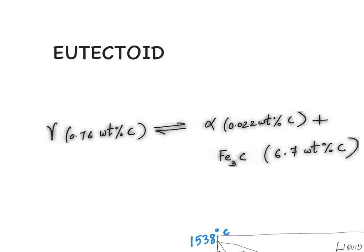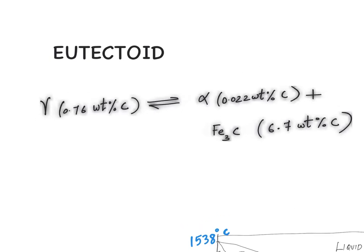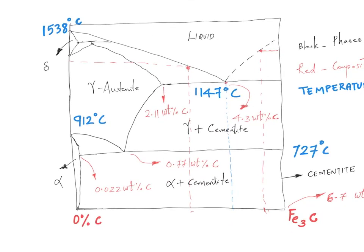If you have forgotten what eutectoid composition and eutectoid reaction are: gamma austenite with 0.76 weight percentage carbon dissociates to give alpha ferrite (very low carbon content) and a cementite phase (considerably high carbon content). The resulting microstructure contains alternate layers of ferrite and cementite, also known as pearlite microstructure.